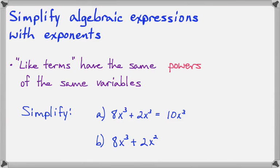But if we have to add 8x³ + 2x², we cannot combine these because we have 8x³ but 2x². They're just not like terms because this is not the same type of term as this. The exponents have to match. So that can't be simplified because these are not like terms.